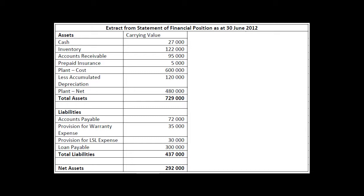We've got cash, inventory, accounts receivable, prepaid insurance, and plant with accumulated depreciation. Then we've got payables, warranty expense provision, long service leave expense provision, and a loan payable. Your task is to work out the tax base for each of them.